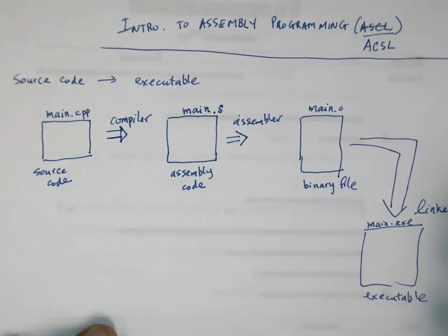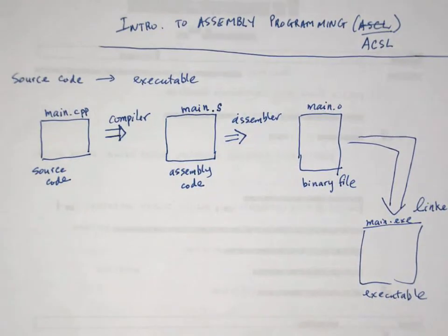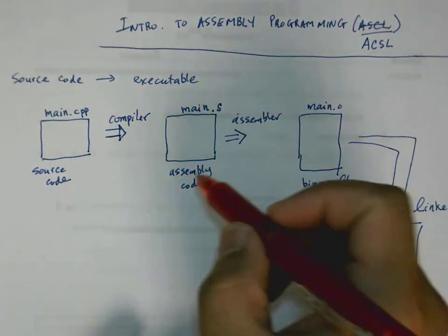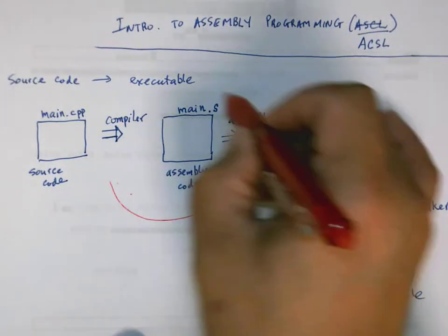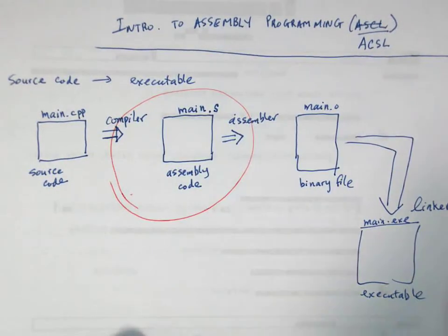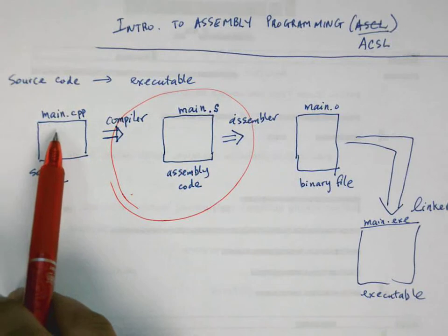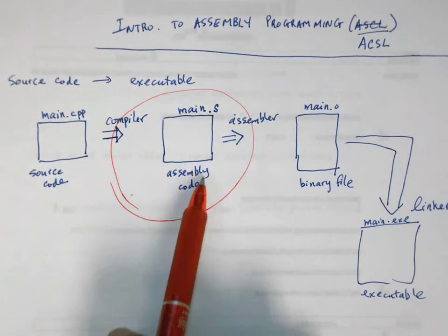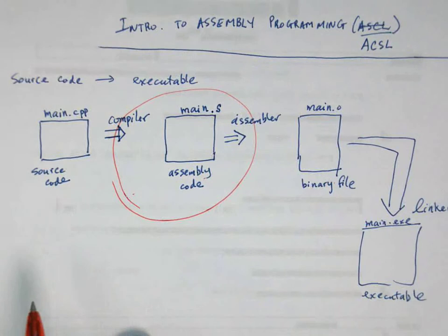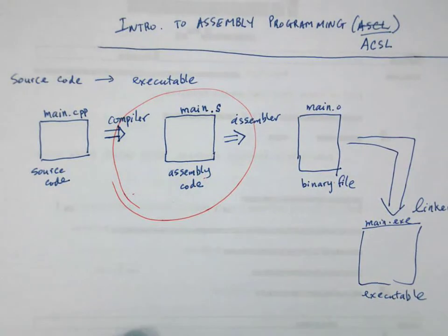The assembly code is what's happening here in this process, in this general area. When the compiler takes C++ code and converts it into assembly code, and then the assembler takes that assembly code and converts it into a binary file—this is the area where assembly code is concerned.